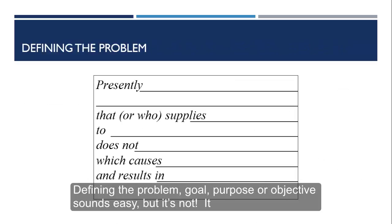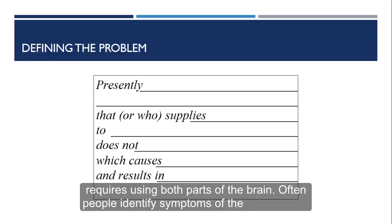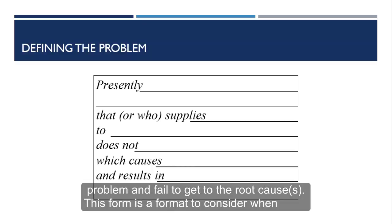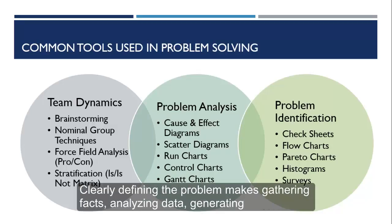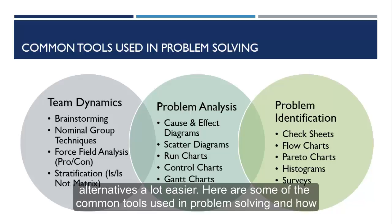Defining the problem, goal, purpose, or objective sounds easy, but it's not. It requires using both parts of the brain. Often people identify symptoms of the problem and fail to get to the root cause. This form is a format to consider when attempting to define a problem. Clearly defining the problem makes gathering facts, analyzing data, and generating alternatives a lot easier.